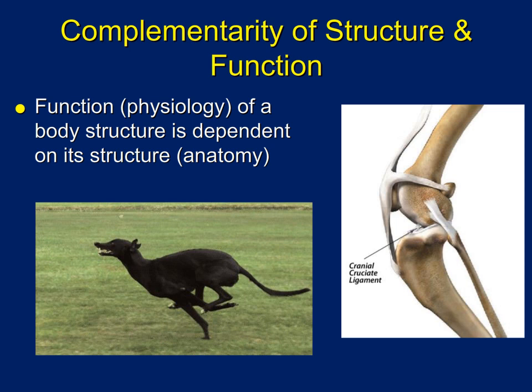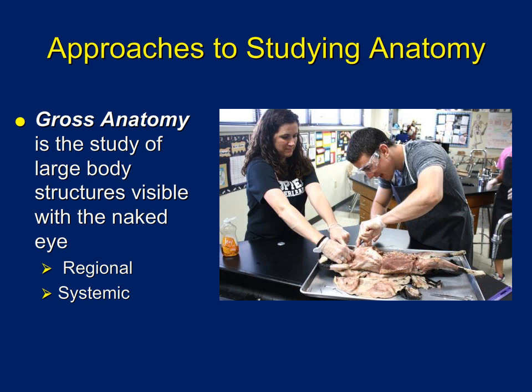There are a lot of different ways to study the field of anatomy. Gross anatomy — where 'gross' means large — is the study of large body structures that can be observed with the naked eye. For example, if you're taking the lab for this class, you're going to be doing a dissection on a cat, during which you'll observe the muscles, the heart, the lungs, and the blood vessels. This is all part of macroscopic anatomy.